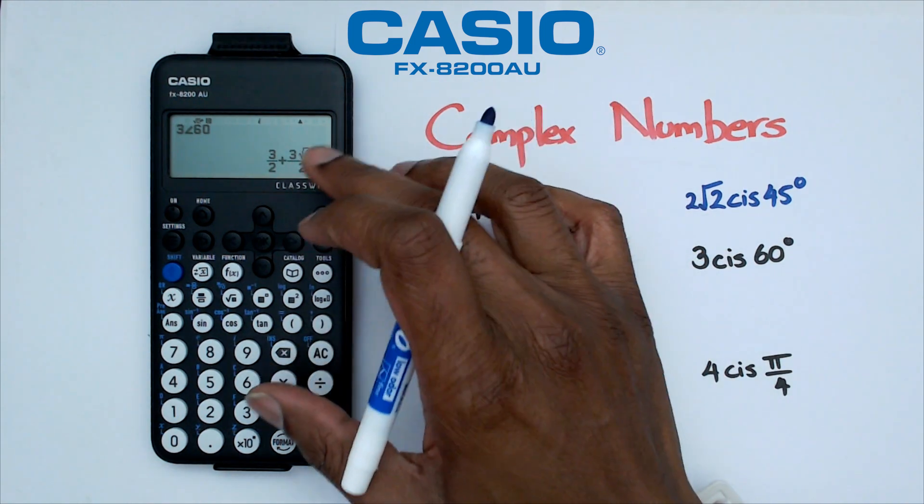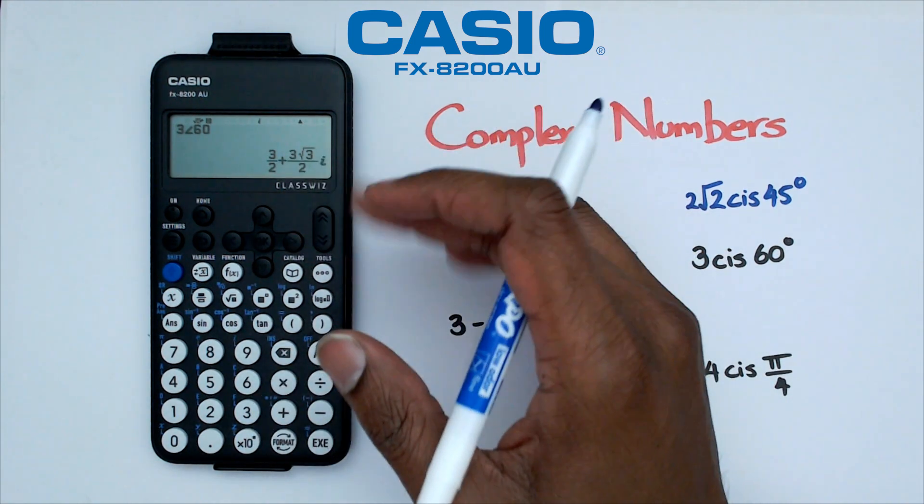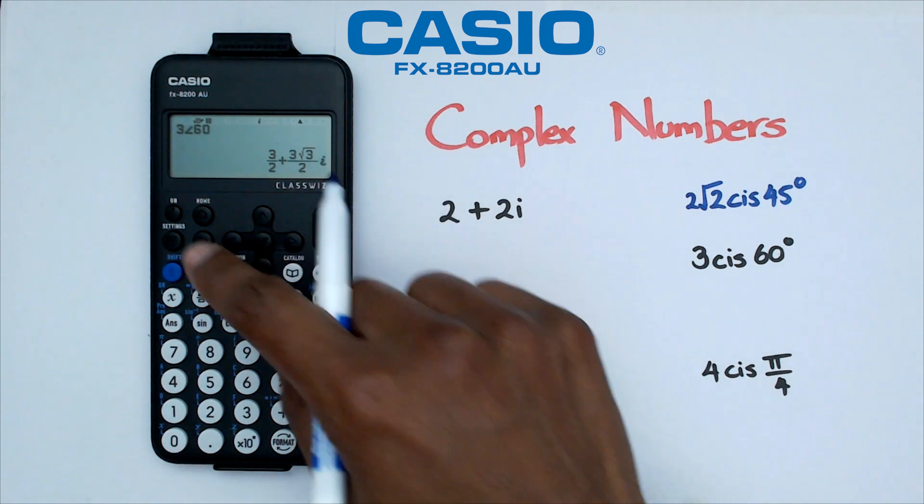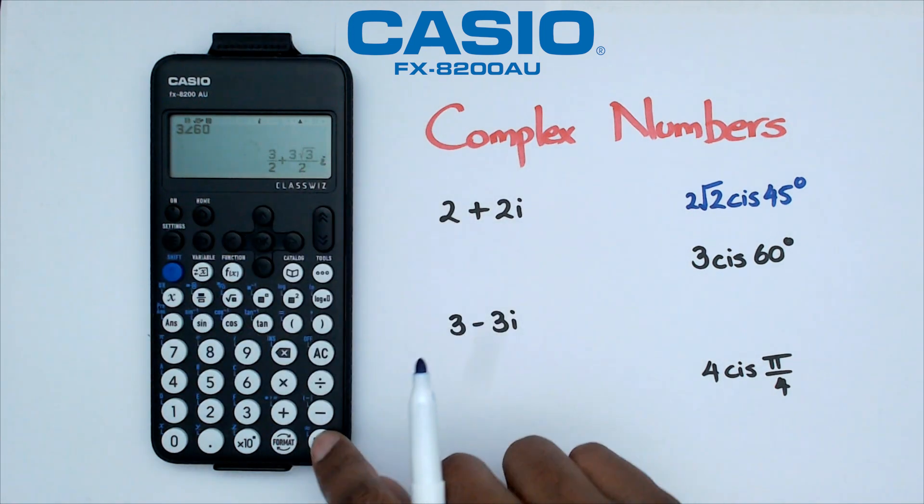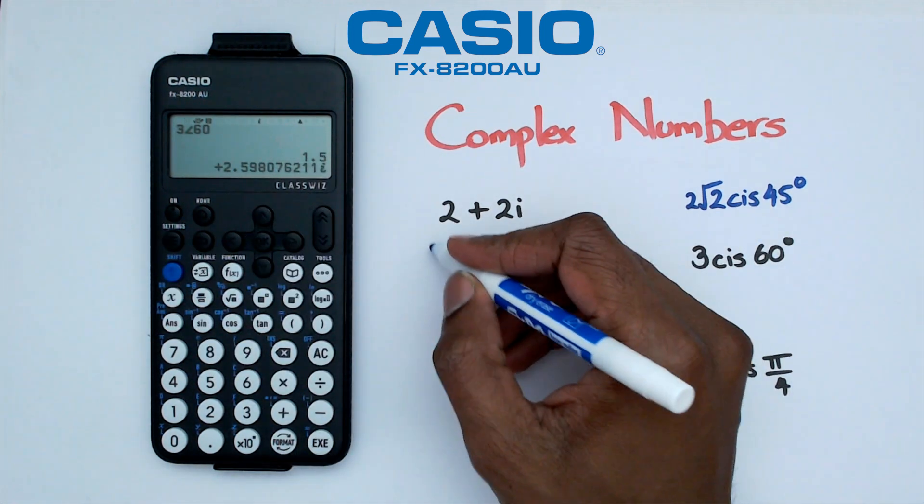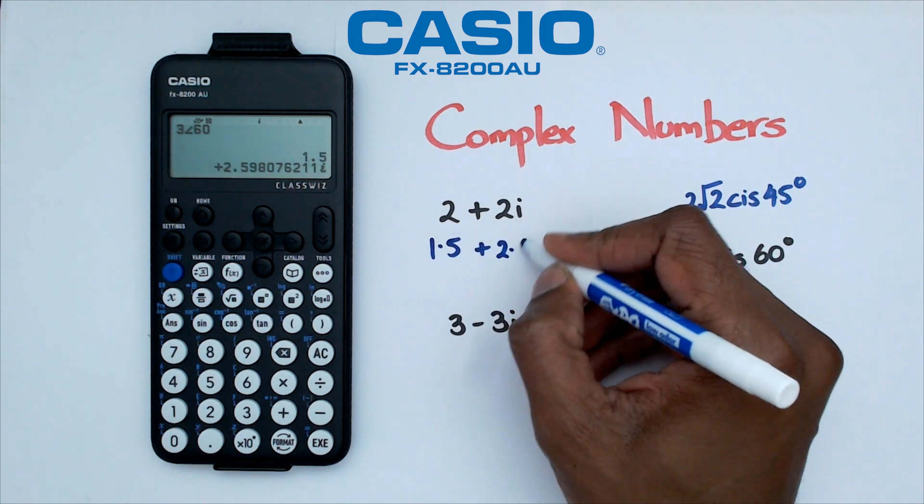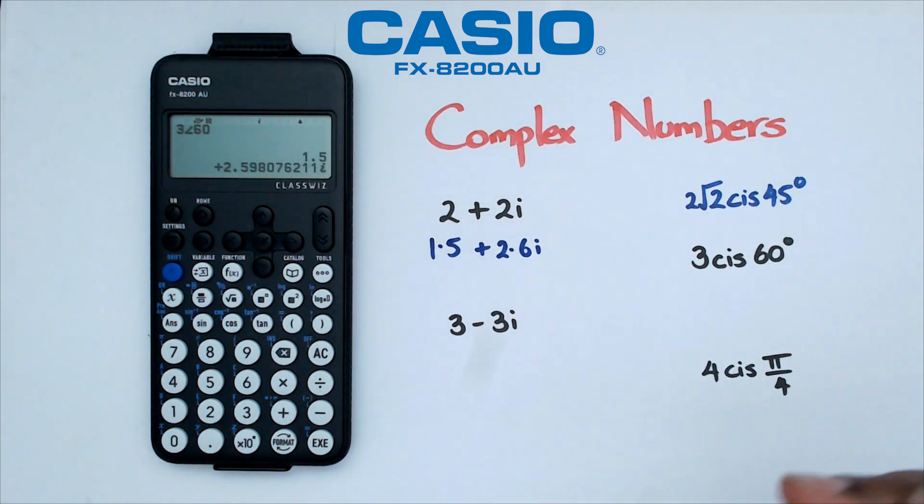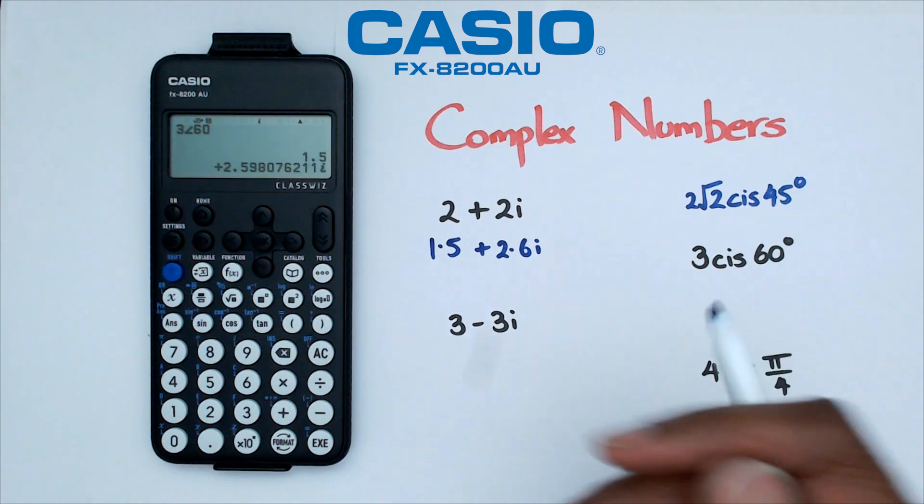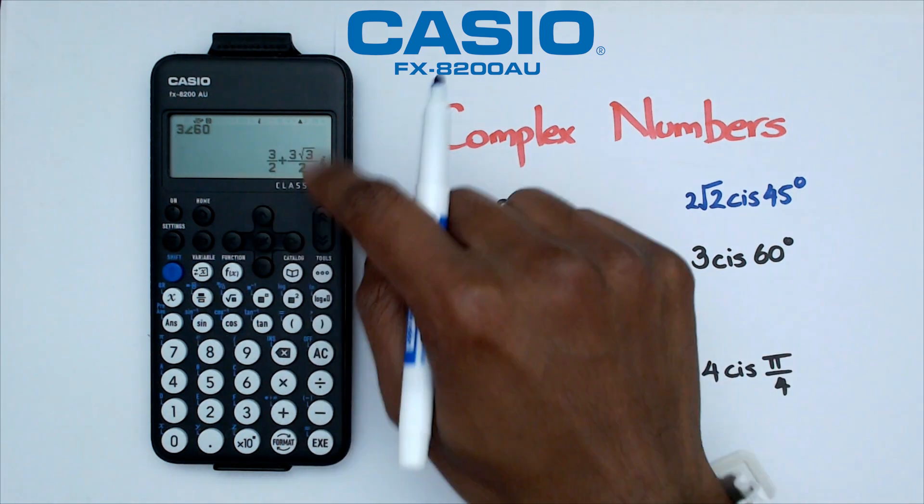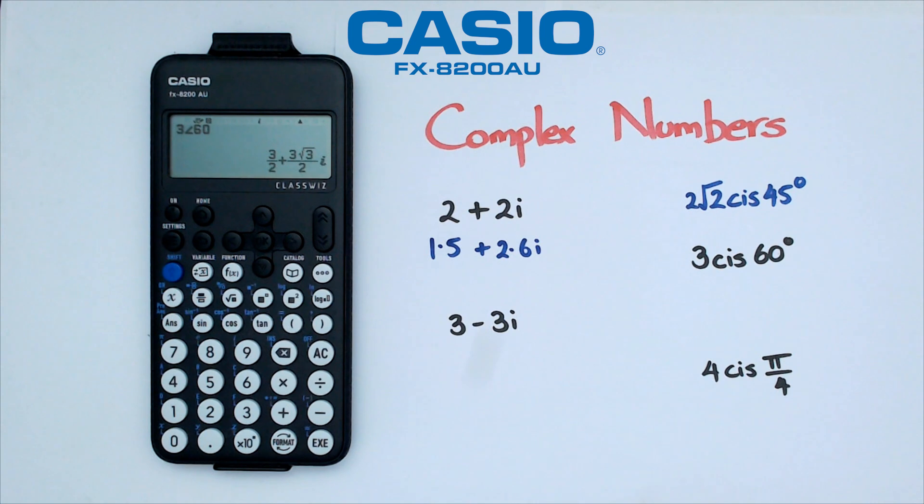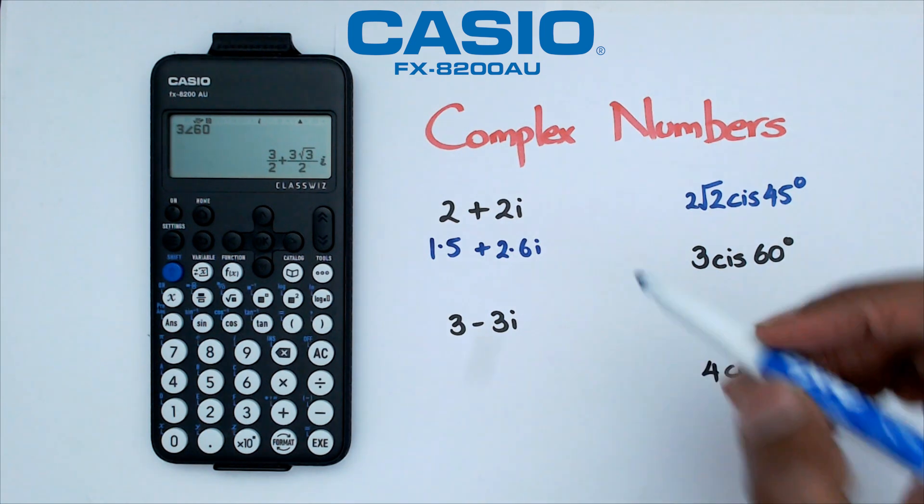Now obviously, you can write this out in fractions in surd form. If you would like this in decimal, you can actually just go shift and equals. And that should give you 1.5 plus 2.6i. Now of course, if you are working in the exams, obviously, you want to keep this in this particular format, because you don't want to round up too early with these types of questions here.